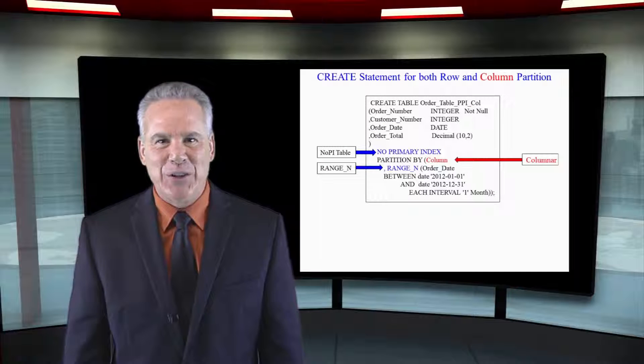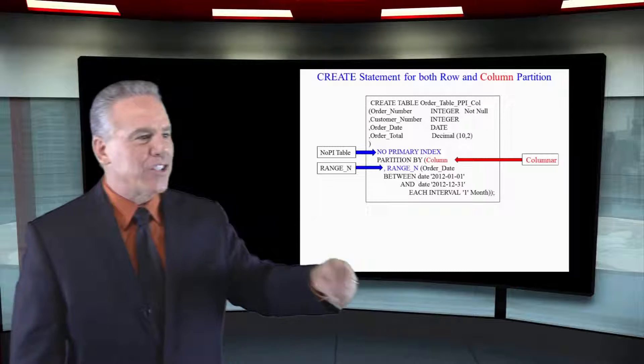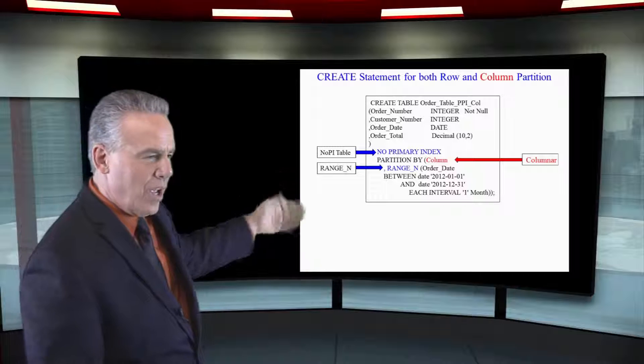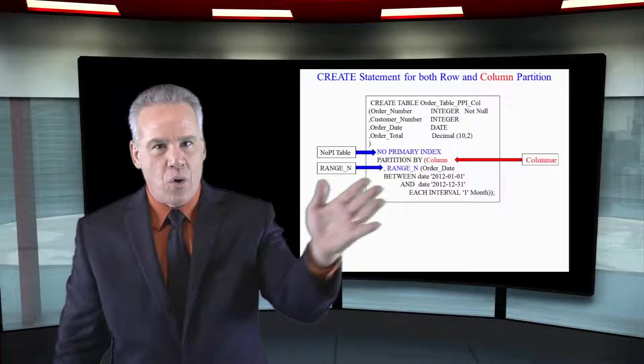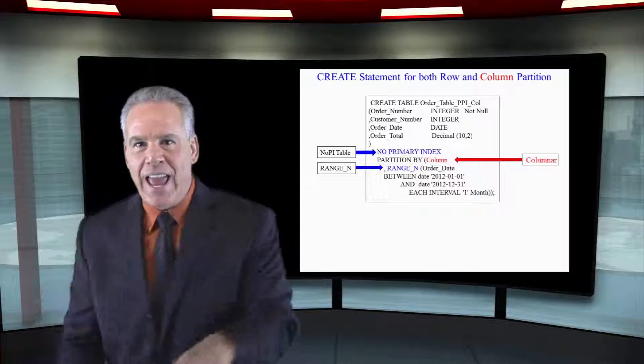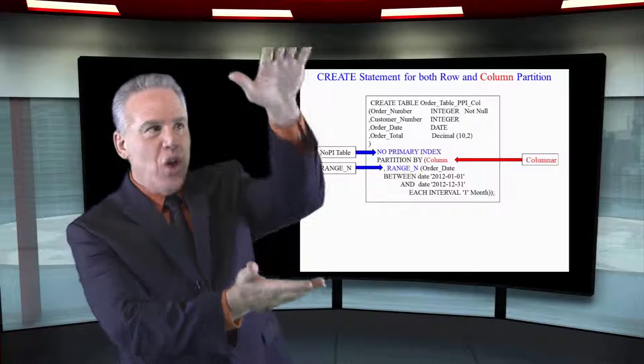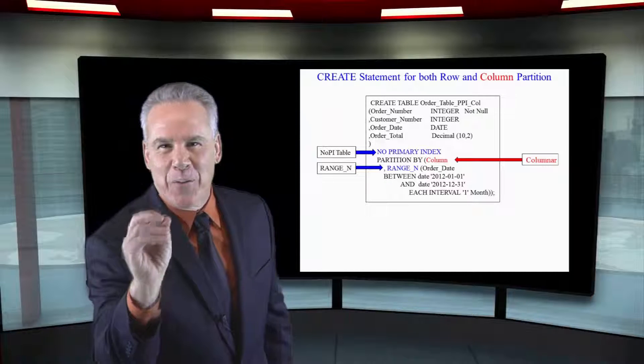Now take a look at this. We actually have a columnar table, we have no primary index. We're partitioning by the column, and then under that, we're doing a range end each interval one month. So we'll see a combination of horizontal partitioning and columnar partitioning, which is considered vertical partitioning.